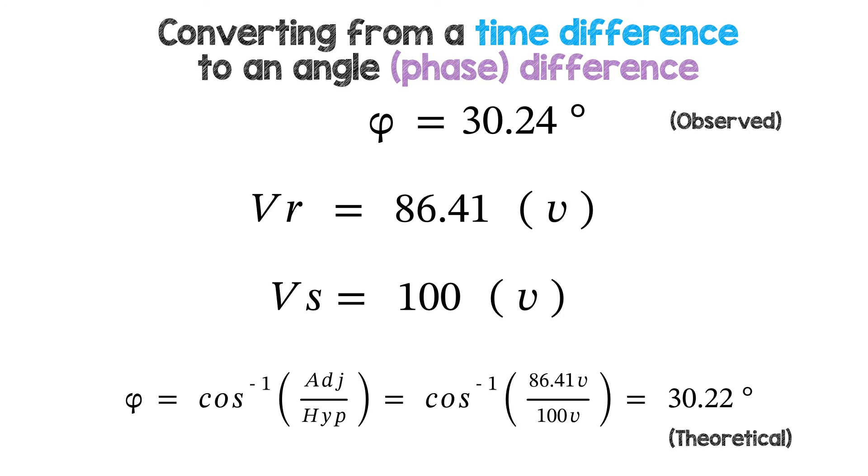So we've got the adjacent and the hypotenuse, so we use inverse cos of 86.41 volts divided by 100 volts, and that gives us a theoretical phase difference of 30.22 degrees, which is only 0.02 degrees off, so that's very accurate.